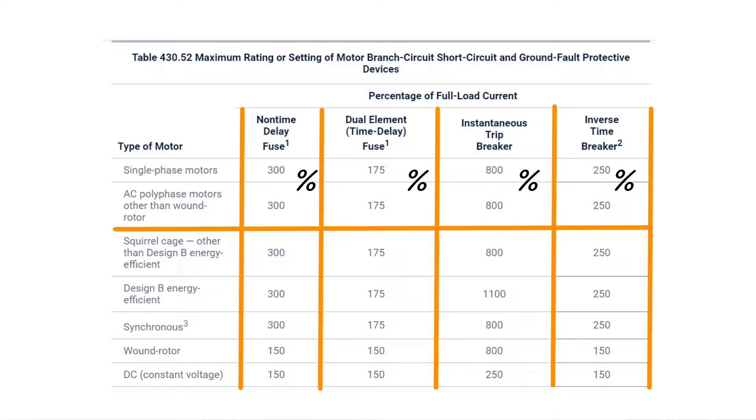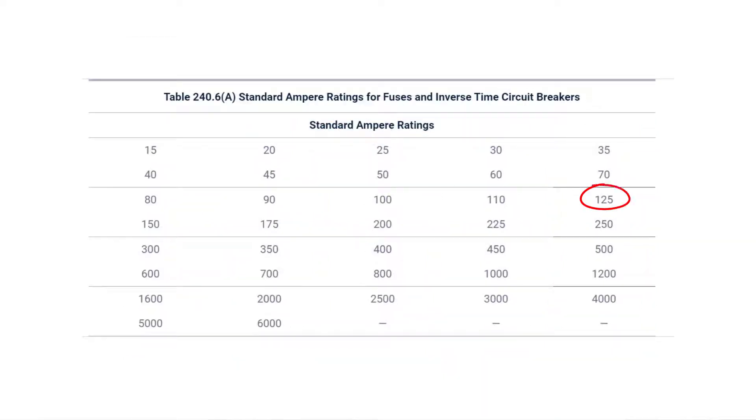That 240-volt fed single-phase 10-horsepower motor was 50 amps, right? If we were to use an inverse time circuit breaker, what's our percentage? 250. So 250% times 50 amps equals what? 125 amps. Is 125 amps a standard fuse or circuit breaker size? We can double check, we know, but we can cross-check.